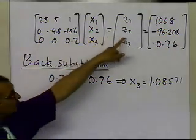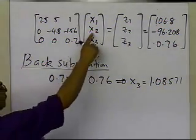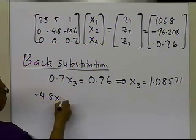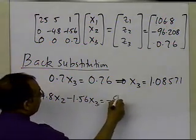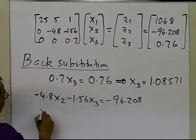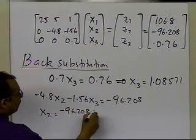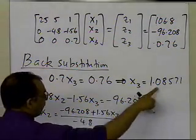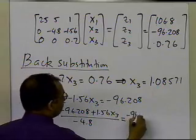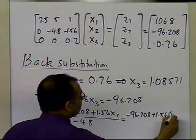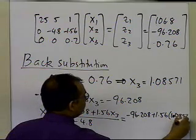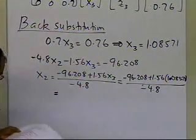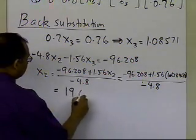Moving to the second equation: minus 4.8 times X2 minus 1.56 times X3 equals minus 96.208. So X2 equals (minus 96.208 plus 1.56 times X3) divided by minus 4.8. Substituting X3 equals 1.08571, we get X2 equals 19.6905.